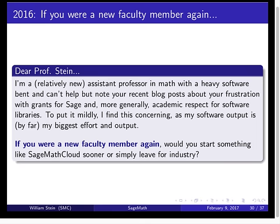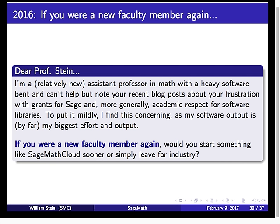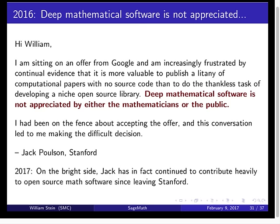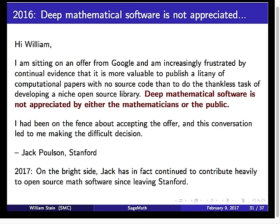Here's an interesting email sent to me by somebody — 'Dear Professor Stein, I'm a relatively new assistant professor in math with a heavy software bent, and I can't help but note your frustration with grants. I find this concerning as my software output is by far my biggest effort and output.' Then he asked me: 'If you were a new faculty member again, would you start something like SageMath Cloud sooner or simply leave for industry?' I answered yes, I would have started a company sooner — we did consider starting one back in 2008 and then decided not to. He wrote back: 'I'm sitting on an offer from Google. Deep mathematical software is not appreciated by mathematicians or the public.' That conversation led him to make the difficult decision — he now works at Google. His name's Jack Paulson. He is still contributing a lot to open source software, which is really cool.